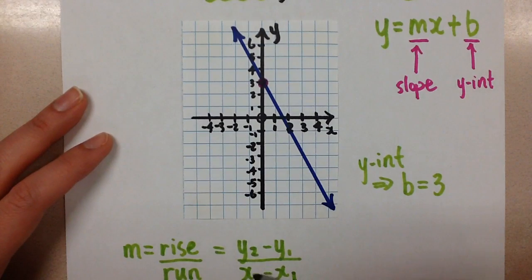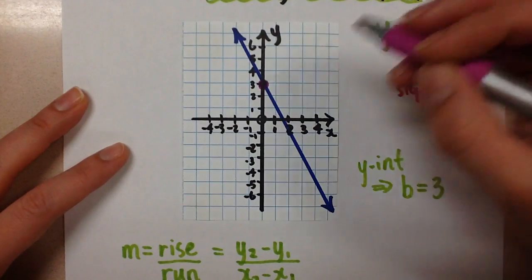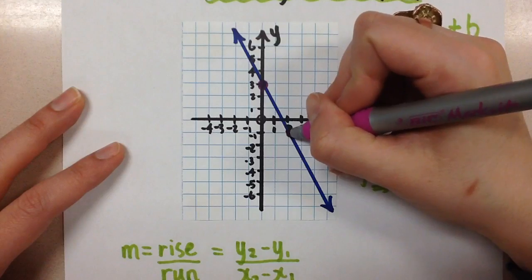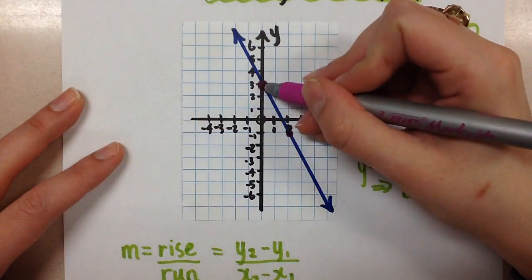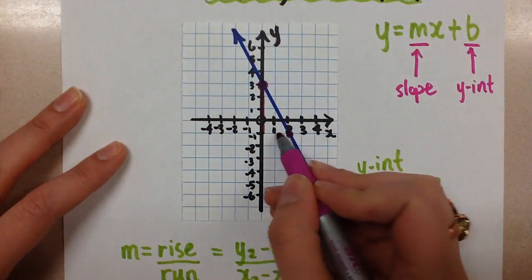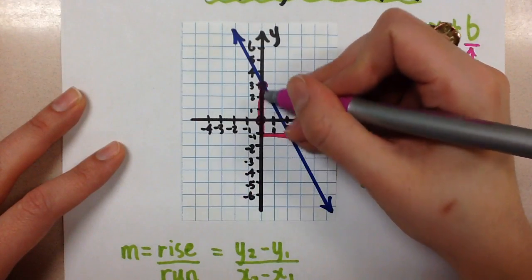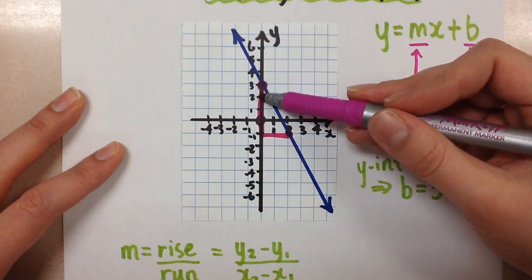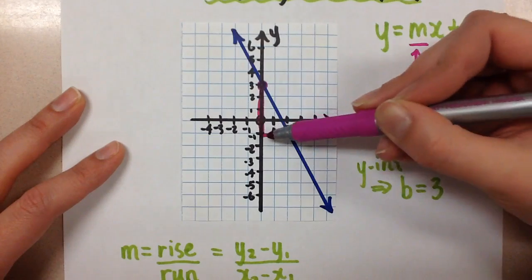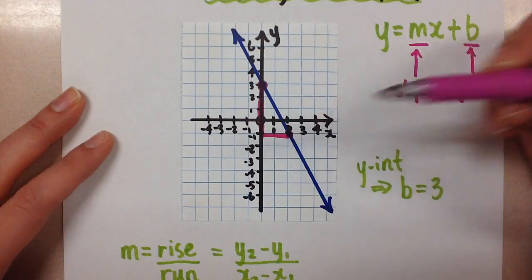So you can use whichever method. If you're going to use the rise over run, then usually we look at our line on the graph. We pick two points, any two points. We draw a right triangle between those two points, like this, and then we determine the rise. So in this case it would be down, and then the run. So it would be to the right here.